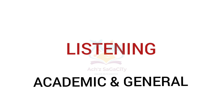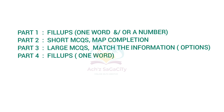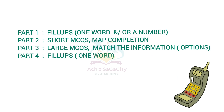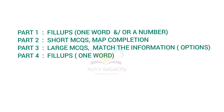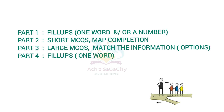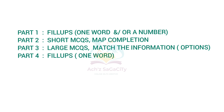Starting from the listening module for both academic and general: in Part 1, you will hear a telephonic conversation between two speakers. The question type will be fill-up — a form completion — and the word limit will be one word or a number. This part will be an easy one. Moving on to Part 2, you will hear a talk from a guide, and the question type will be short MCQs and also map completion. This part will also be easy.